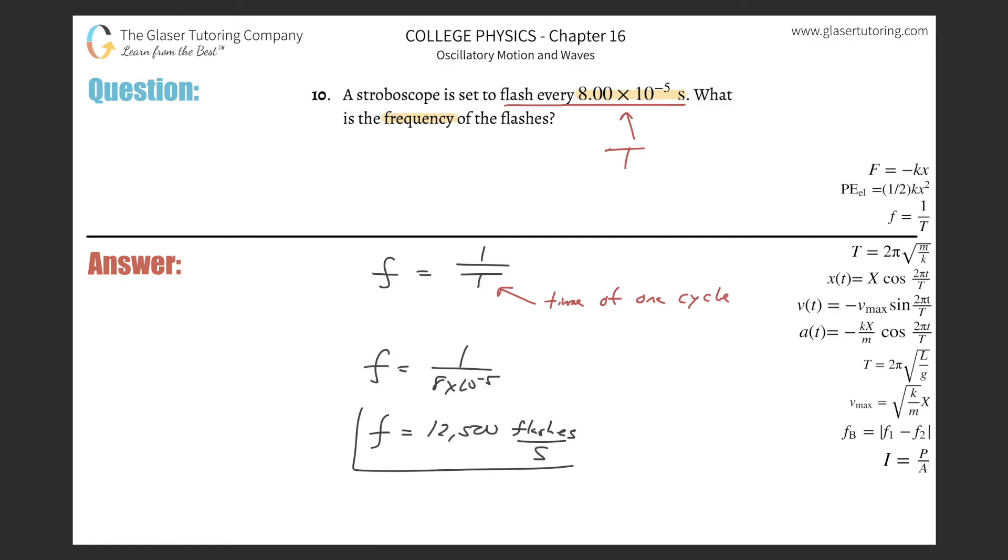And that should make sense, right? If each flash, the time between flashes basically is about 8 times 10 to the minus 5 seconds, meaning a fraction of a second, right? That means that then in one second there should be a whole boatload of flashes.